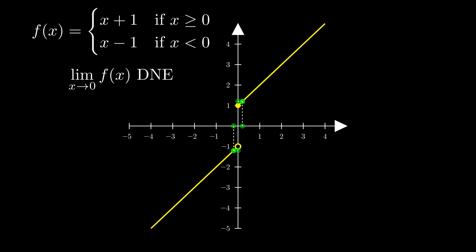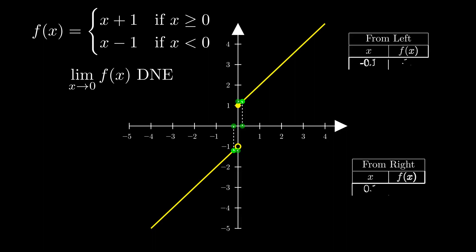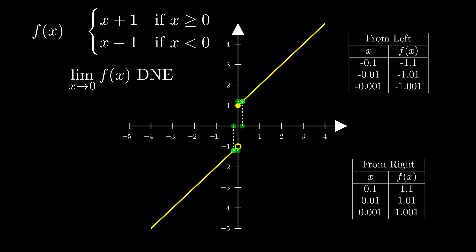A technique that introductory calculus students sometimes use when trying to prove the limit behavior of more involved functions like this is to choose values that get closer and closer to the input value from both sides, and then put them and their associated function values into tables. If the function values for the left side approach a value that matches that of the right side, then the limit exists. Otherwise, like in this example, the limit does not exist.